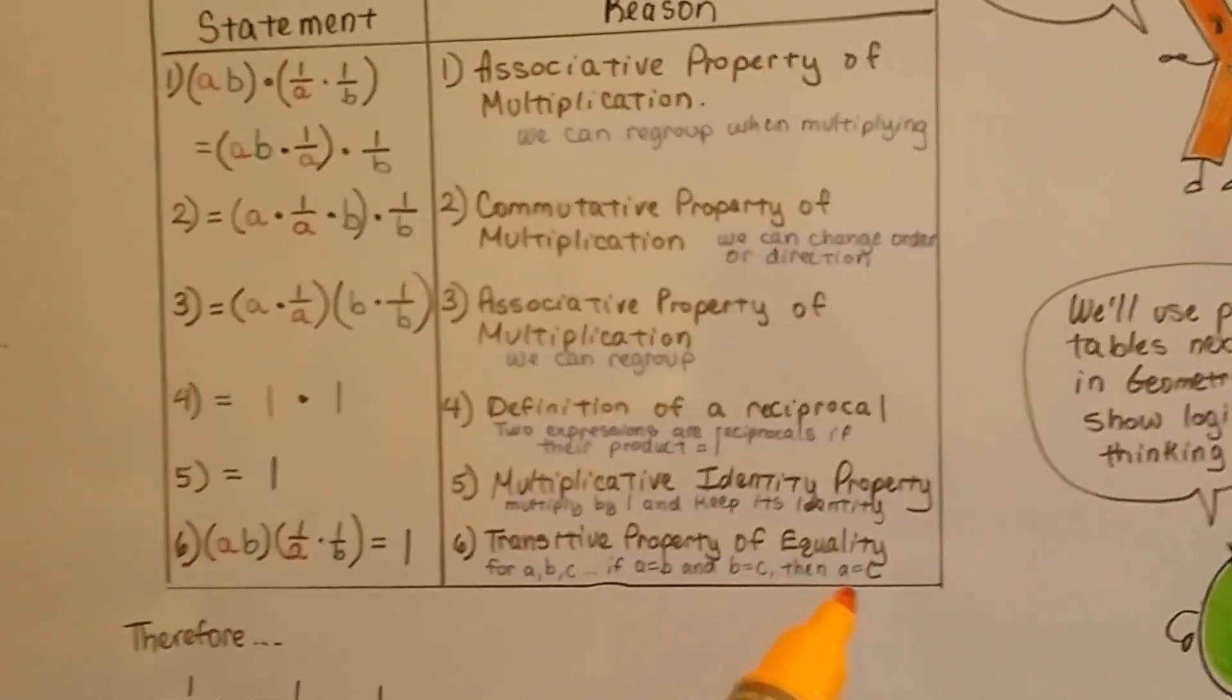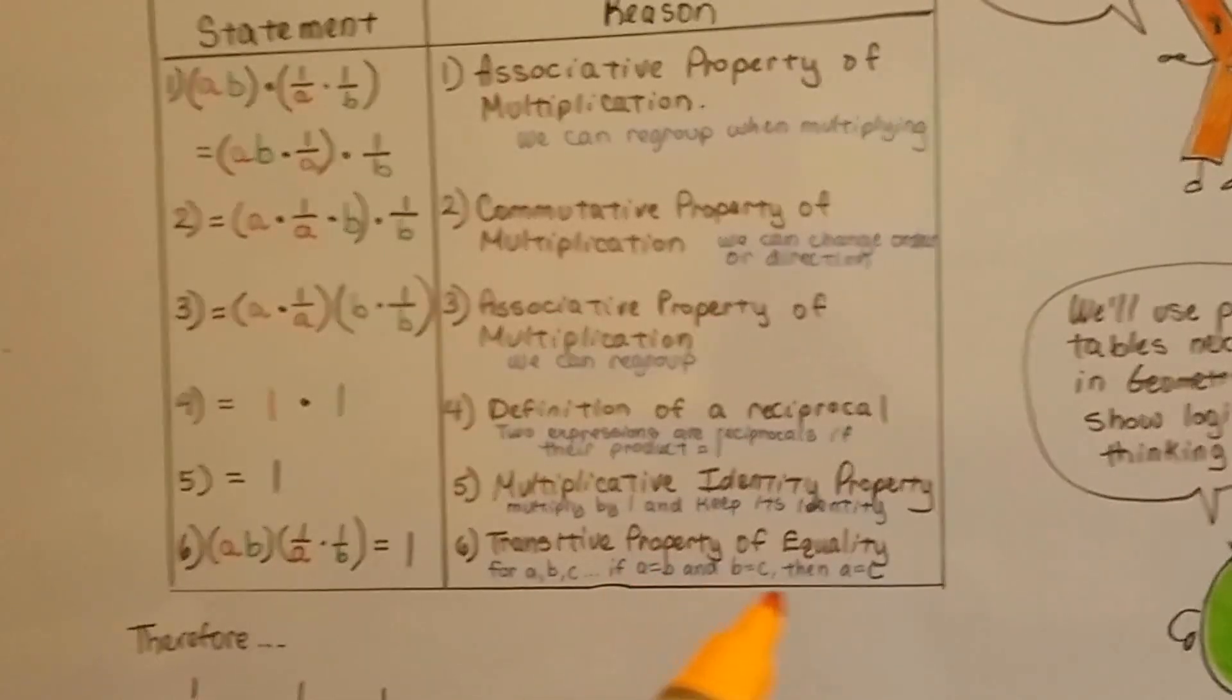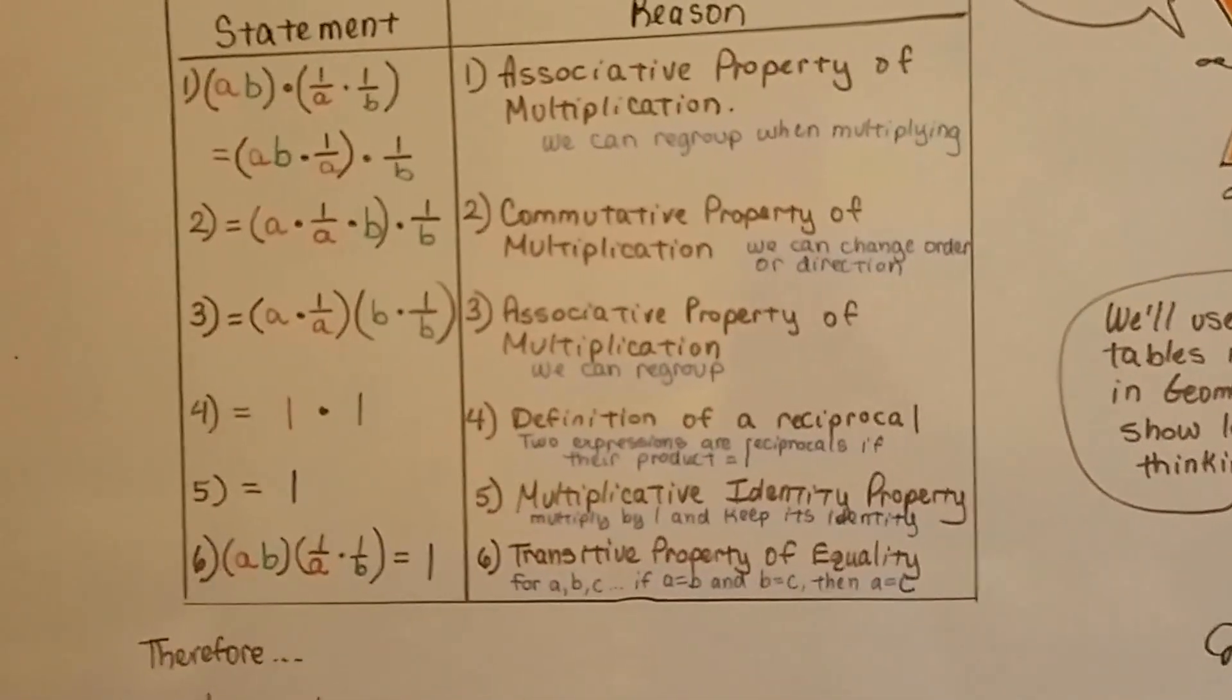...then the first one, a, is equal to the third one, c. If a and b are equal and b and c are equal, then a and c have to be equal.